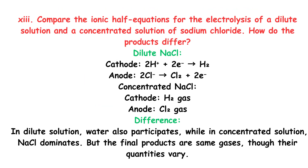Long Question: Compare the ionic half-equations for the electrolysis of dilute versus concentrated solution of sodium chloride, and how do the products differ? Dilute NaCl vs. concentrated NaCl — at cathode: H₂ gas in both; at anode: Cl₂ gas in concentrated. Difference: in dilute solution, water also participates, while in concentrated solution, NaCl dominates. But the final products are the same gases, though their quantities vary.